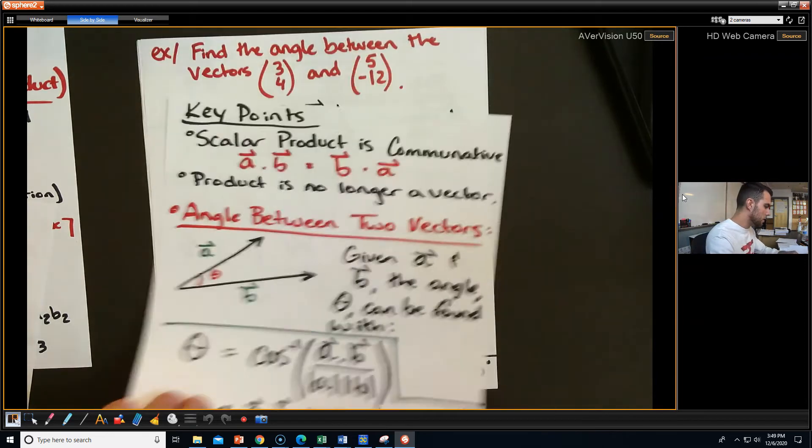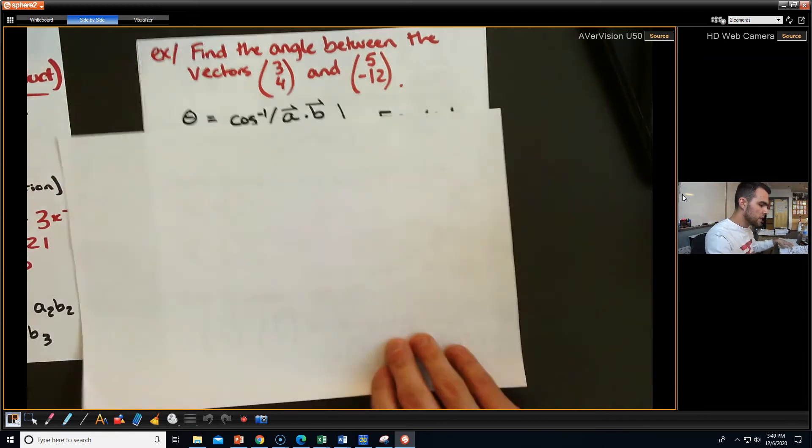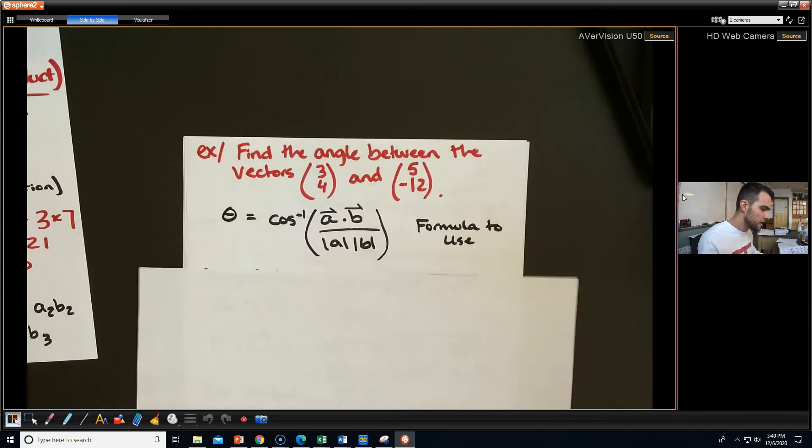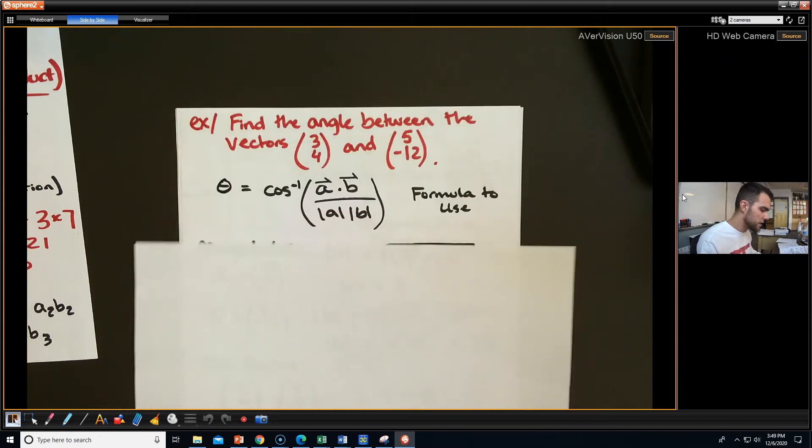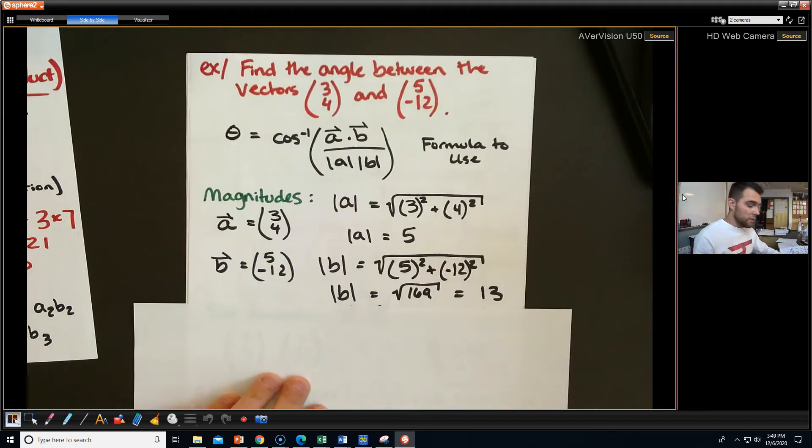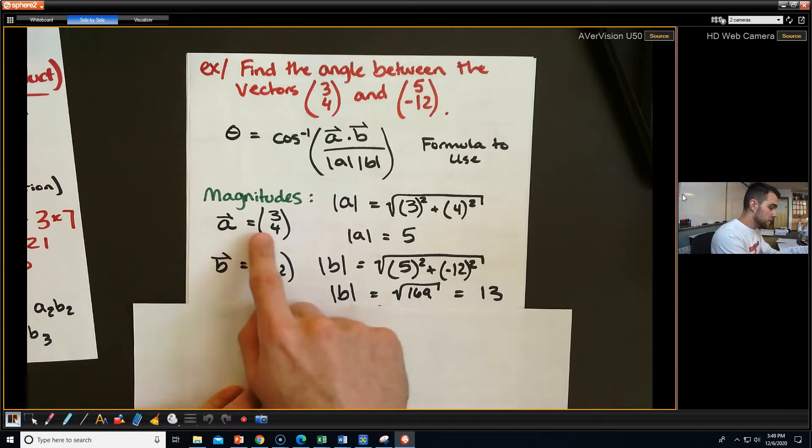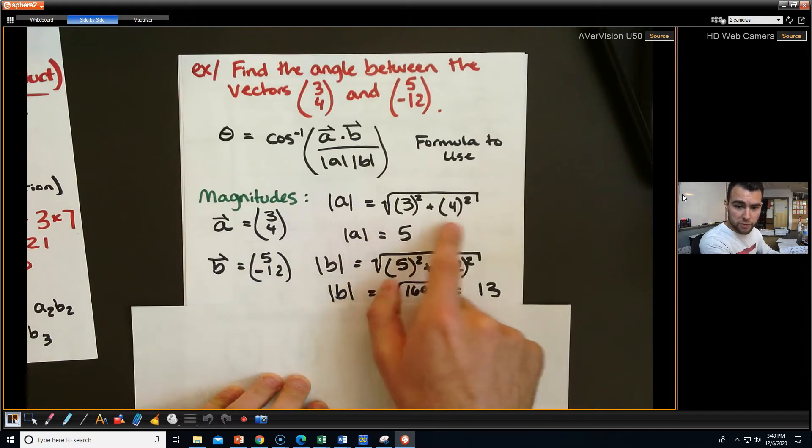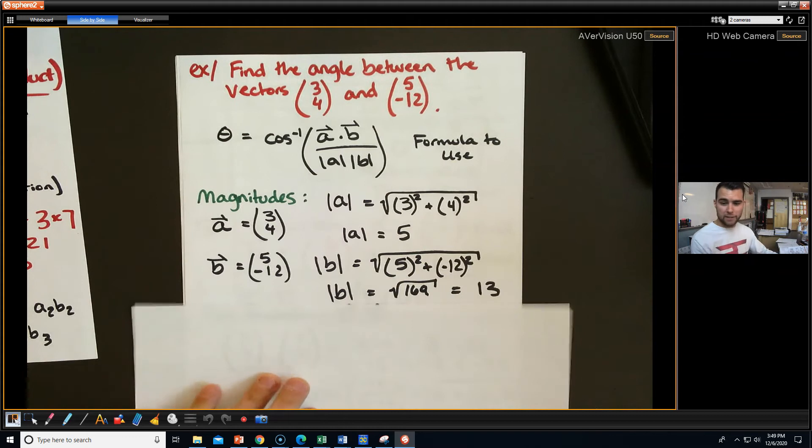Let's find the angle between these two vectors right here. We're going to use this formula. To find the magnitudes, you're just going to use Pythagorean's theorem with the components. I'm going to call this first one vector A, this one vector B. I'm just going to do 3 squared plus 4 squared, take the square root, and then I'm getting 5 for my magnitude of A. I do the same thing with vector B, and I end up getting 13.